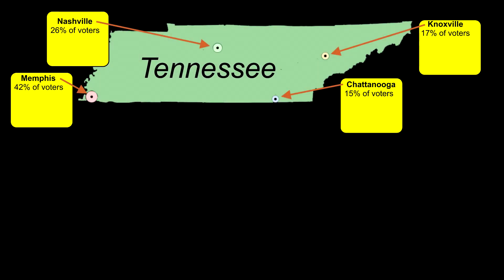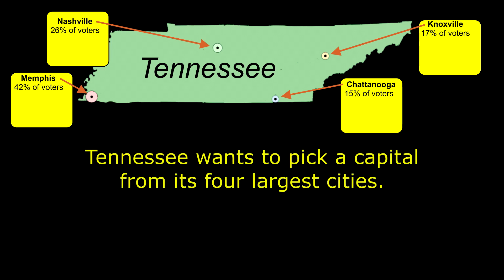Imagine that the state of Tennessee is having an election for the location of its capital. Tennessee has two large cities, Memphis and Nashville. These will represent the centrist candidates. However, it also has two medium-sized cities that are further away from the center.